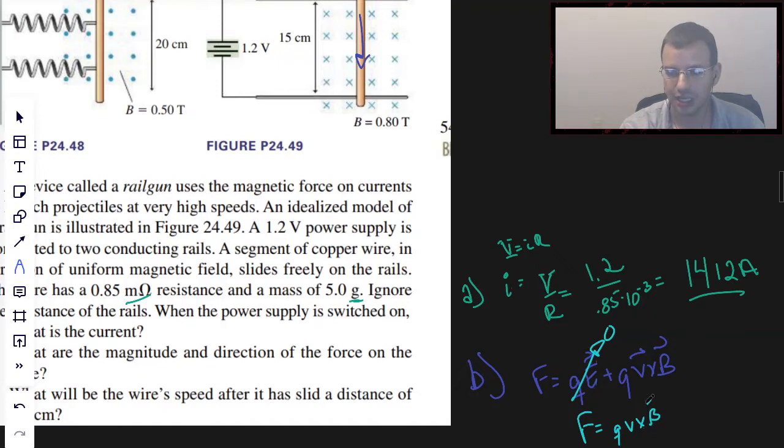So we have force equals QV cross B. For current, it's negative charges moving in the negative direction. But by convention, we assume that it's positive charges moving in the positive direction. So we have little positive charges going around in a loop here. And so we have the current going down, so we're going to cross product.